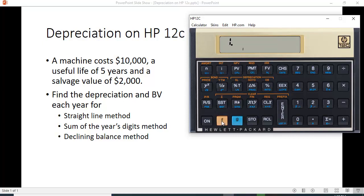You're going to hit one, function, and above the delta percent sign is sum of the years digits. You see it's $2,666.67.